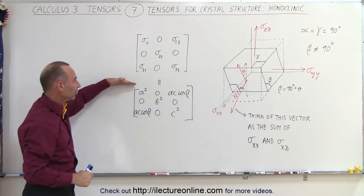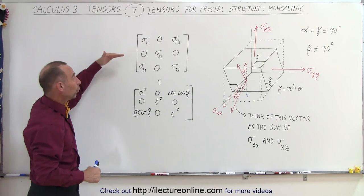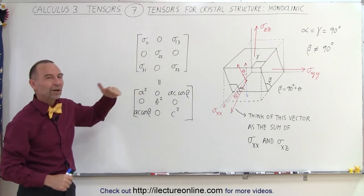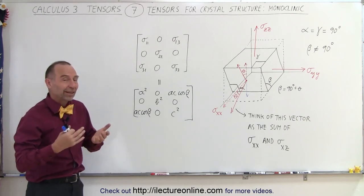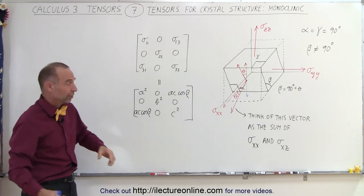Now notice we now use letters a, b, and c to represent 1, 2, 3 to represent x, y, z. Another illustration that there's a lot of different formats here to represent tensors, which again adds to the confusion.